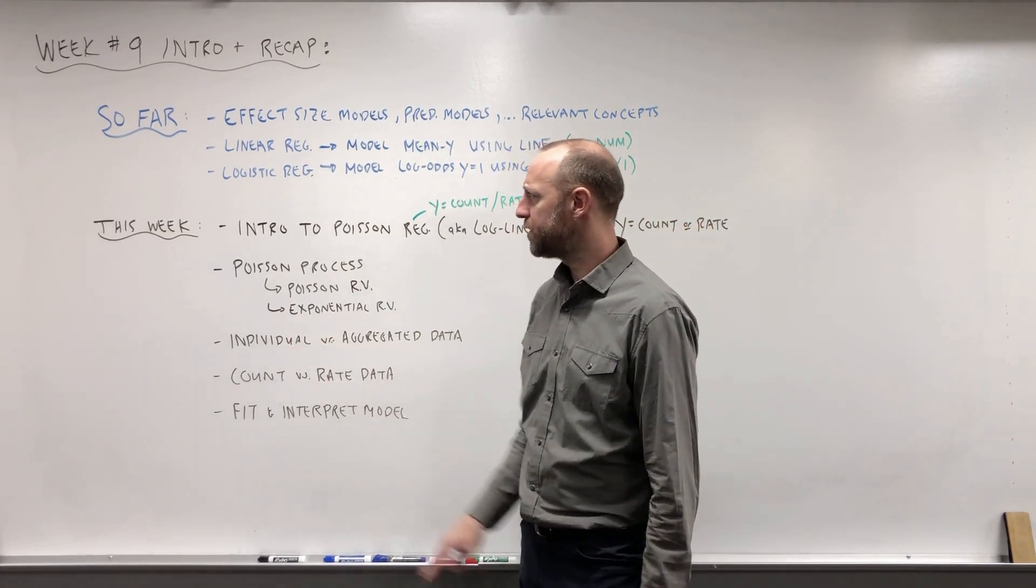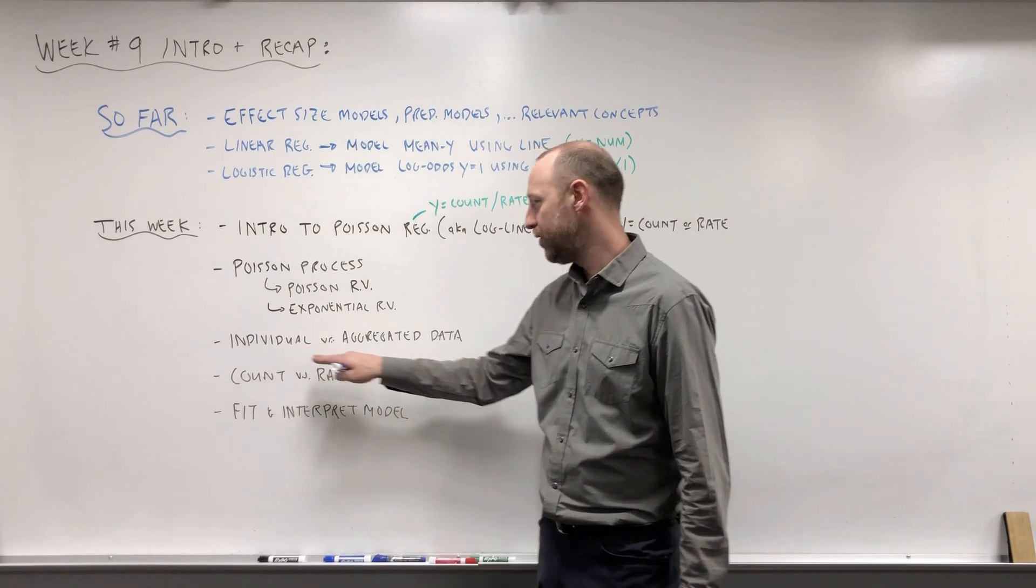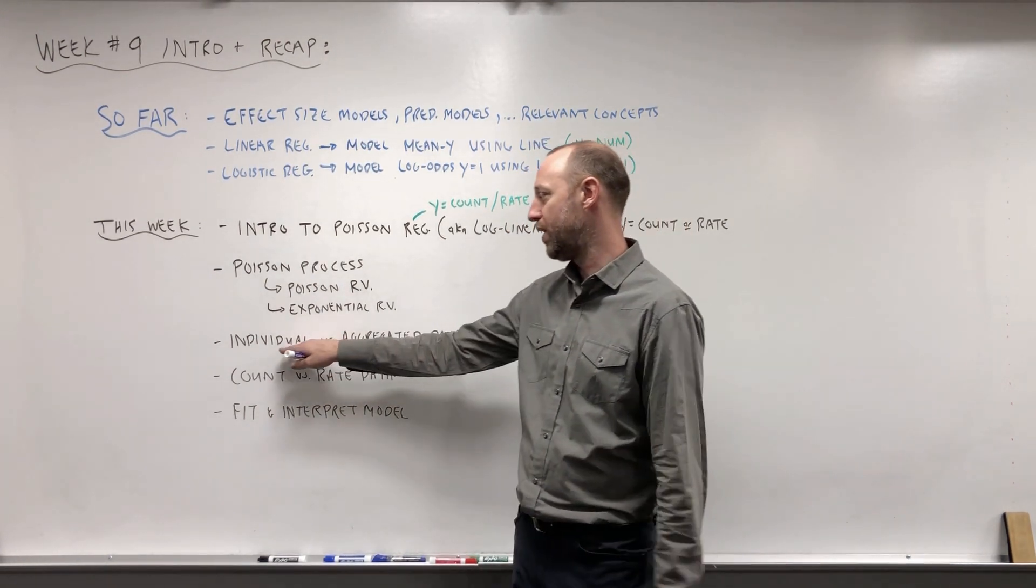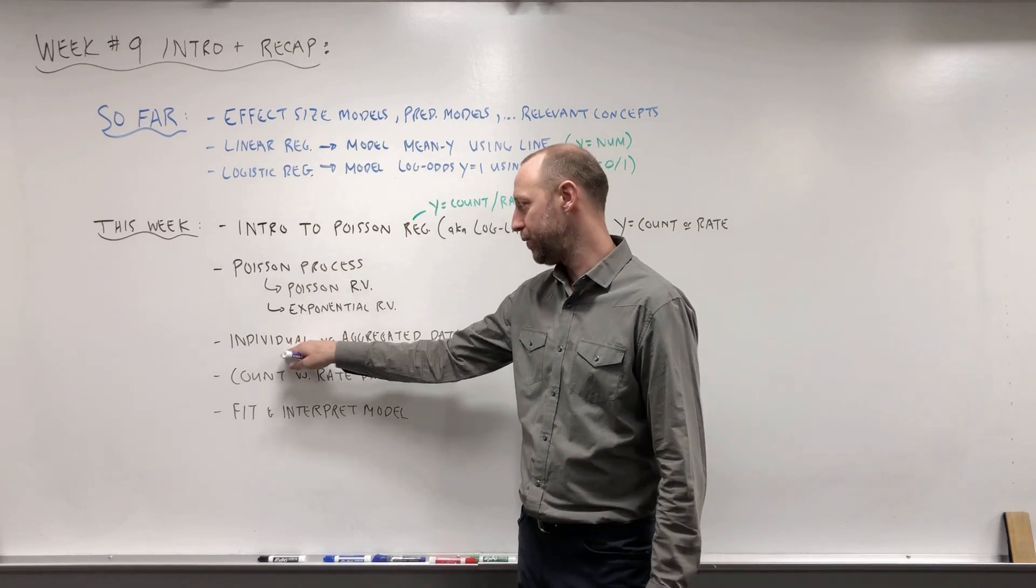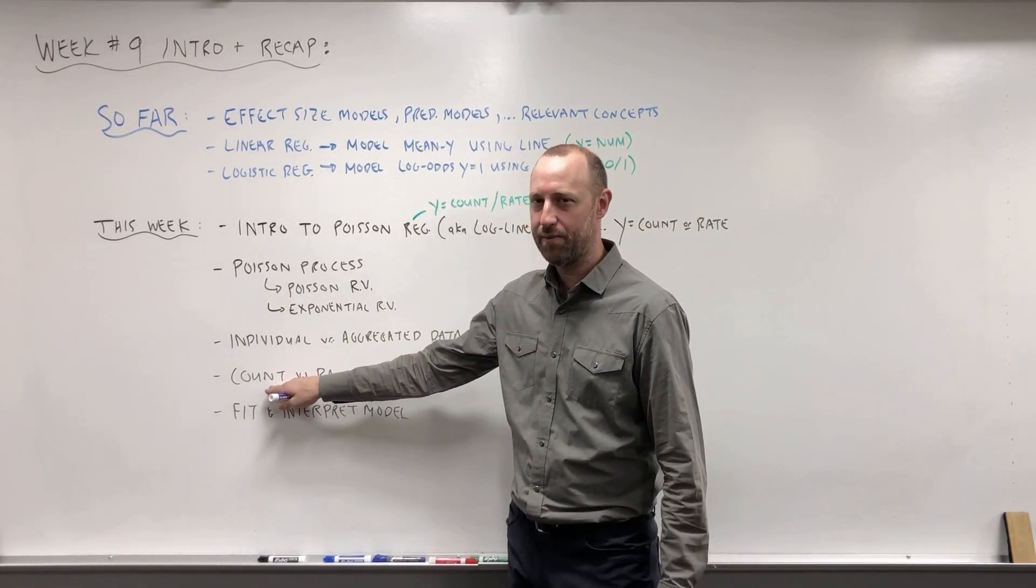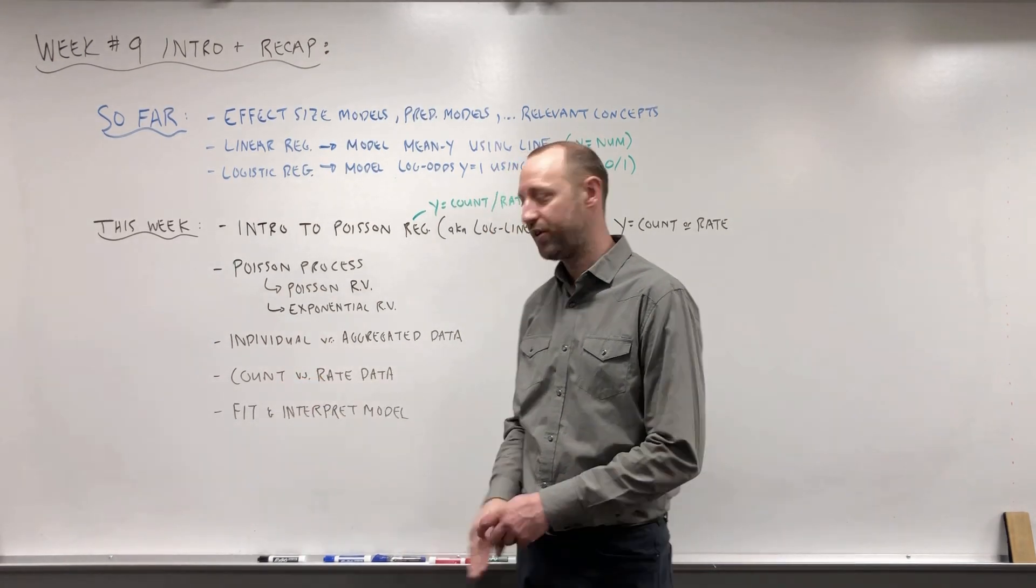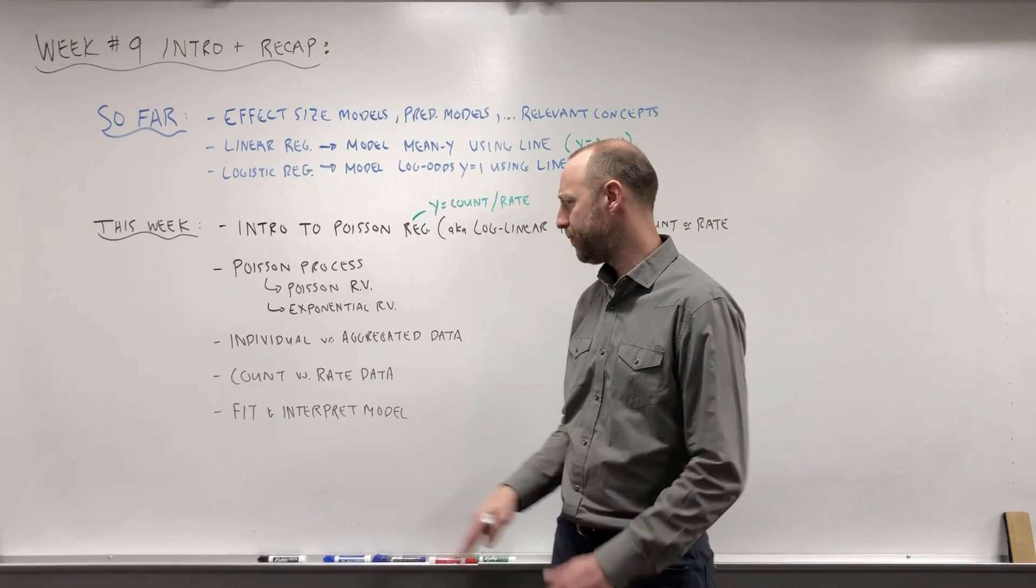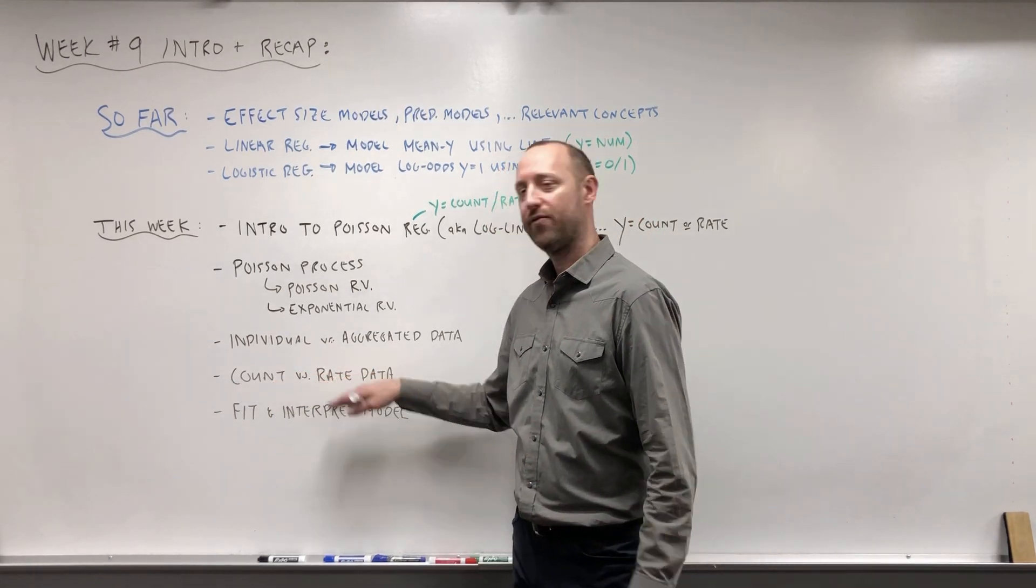We'll talk about what does it mean for the data to be on an individual level versus aggregated. So if we have to group things together, or if we can record how often the event occurred for an individual. We'll talk about what does it mean if we're measuring counts, the number of times the event occurred, or rates, the number of times it occurred per unit time. So we'll talk about when we can model the count versus model the rate.